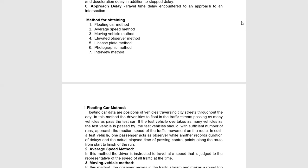In the floating car method, we take an observer — actually we have 4 observers sent in one vehicle. The first observer has 2 stopwatches. On the first stopwatch, he records time at various control points like intersections or bridges. On the second stopwatch, he records the amount of time delayed at each particular location, such as intersections or bridges. So, from this we know how much time was delayed and at what time.